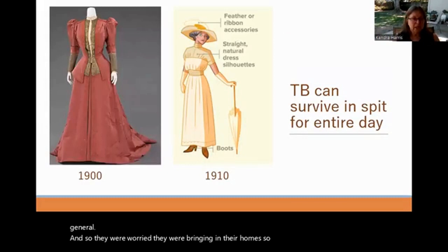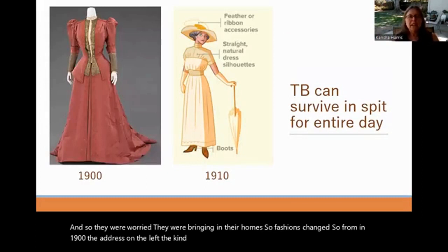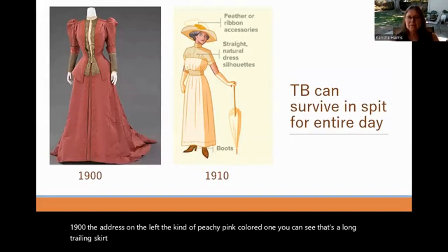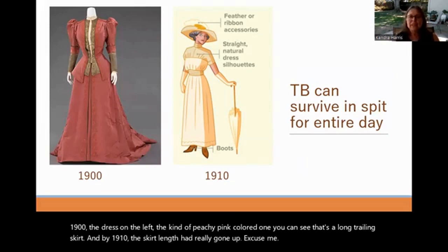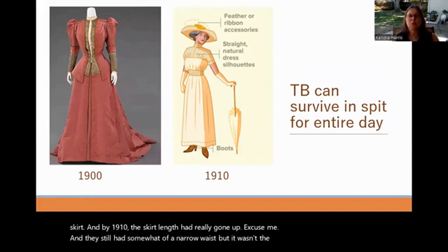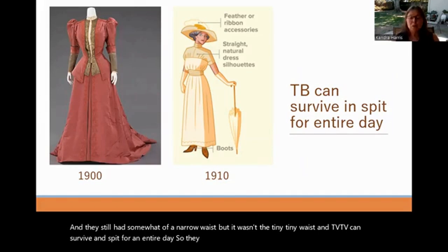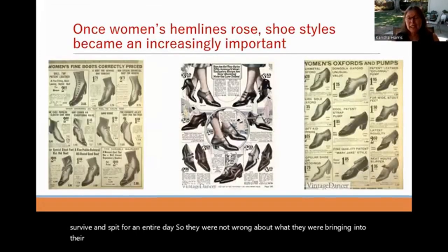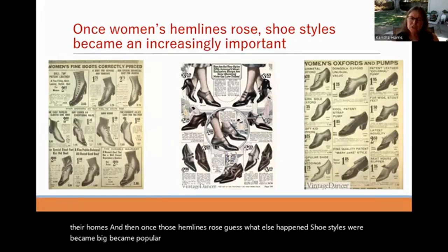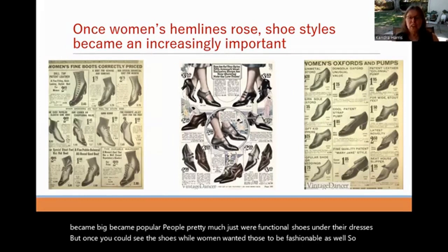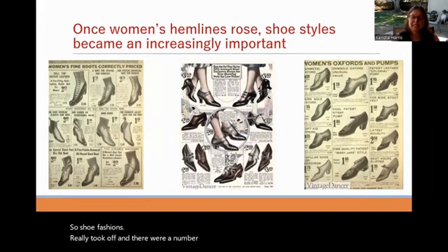Once those hemlines rose, shoe styles became popular. People had mostly worn functional shoes under their long dresses, but once you could see the shoes, women wanted those to be fashionable as well — so shoe fashions really took off. The corsets that had been worn to emulate tuberculosis were now seen as harmful — people realized they were harming their lungs and preventing circulation of blood. These were heavily boned corsets with whale bones or other carved flat bones all the way around, laced very tightly at the waist.